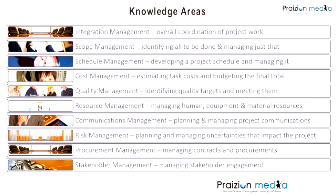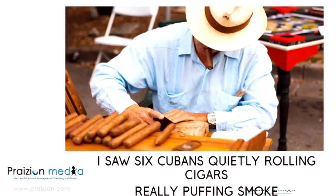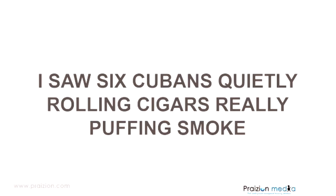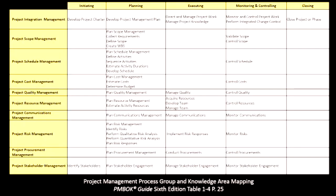So if you take a look at the screen, it shows you that if you slice project management by process group and you slice it by knowledge area, you get intersections. And those intersections are processes. There are 49 processes of project management, and these 49 processes are used to do different things.